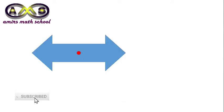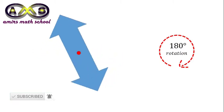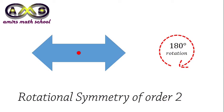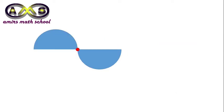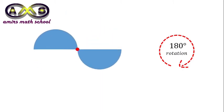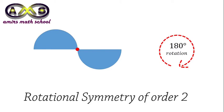Some figures with rotational symmetry of order 2. After 180 degree rotation, this figure became identical — exactly the same as the initial position. So, this figure has rotational symmetry of order 2. Another one: after 180 degree rotation, it became identical with the initial position. So, this figure also has rotational symmetry of order 2.